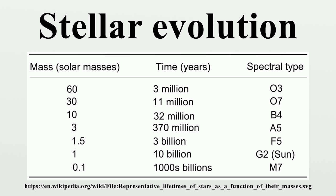Protostars are encompassed in dust and are thus more readily visible at infrared wavelengths. Observations from the Wide Field Infrared Survey Explorer have been especially important for unveiling numerous galactic protostars and the parent star clusters. Protostars with masses less than roughly 0.08 solar masses never reach temperatures high enough for nuclear fusion of hydrogen to begin. These are known as brown dwarfs. The International Astronomical Union defines brown dwarfs as stars massive enough to fuse deuterium at some point in their lives.